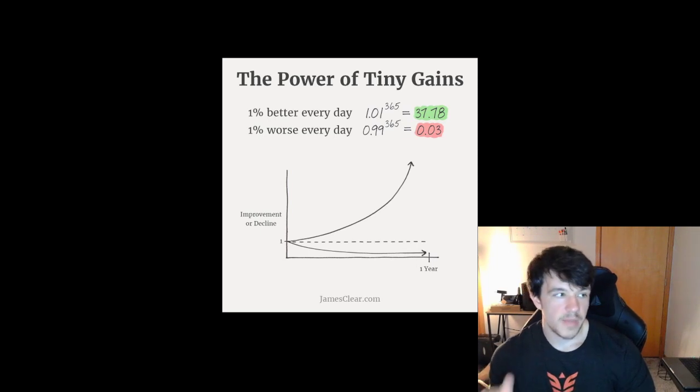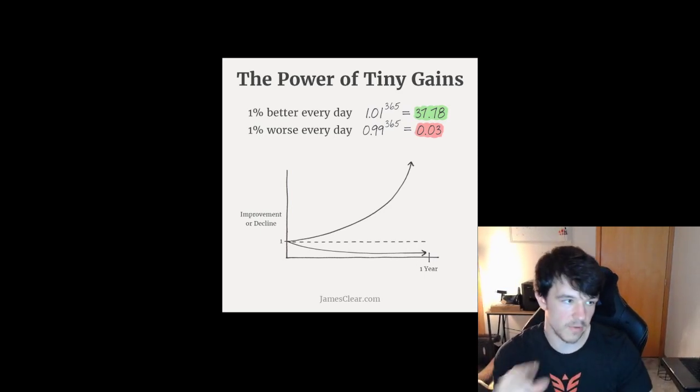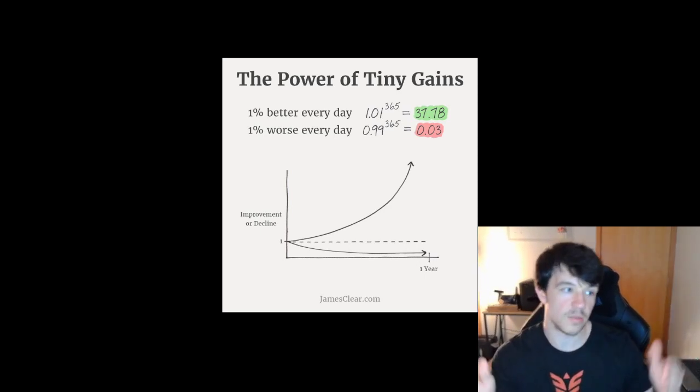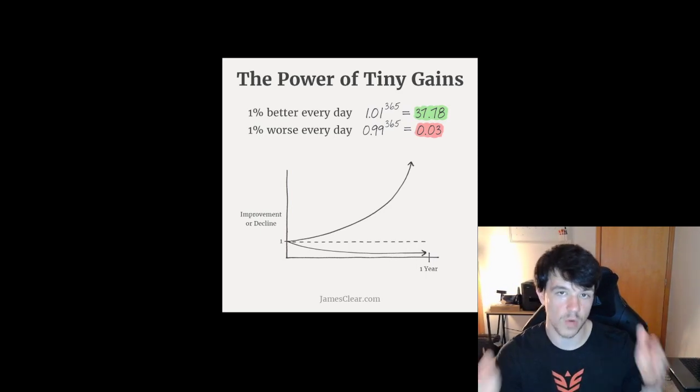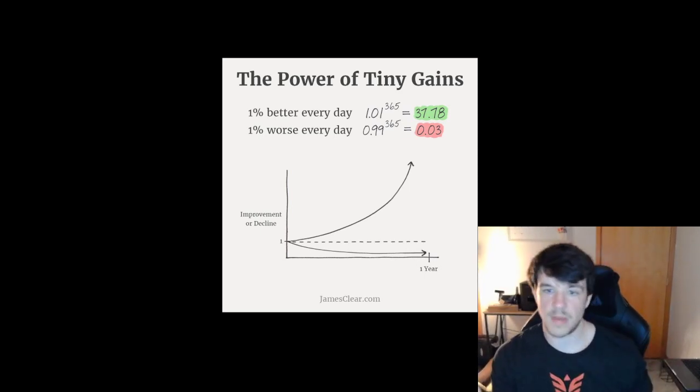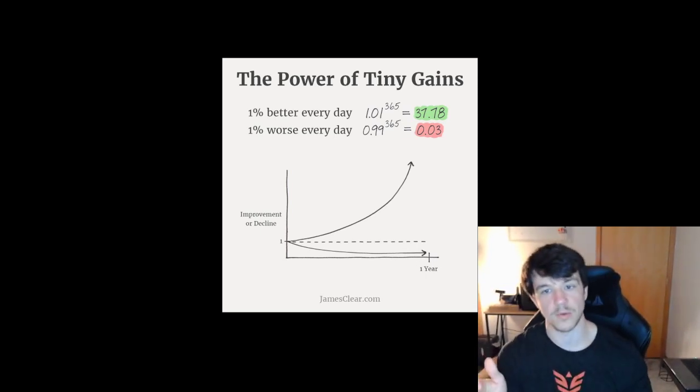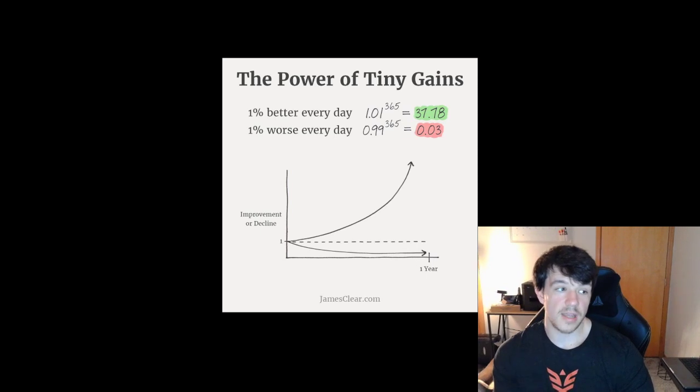Getting 1% better every day over and over for a consistent period of time - the to-the-power-of-365 means that you did 365 days in a row of consistently getting 1% better, otherwise that math doesn't work. If you're consistently every day just trying to get 1% better, that's how the math works. If you're starting at 1, you're ending at 37.78. You're ending way way higher at the end of just one year than where you started.